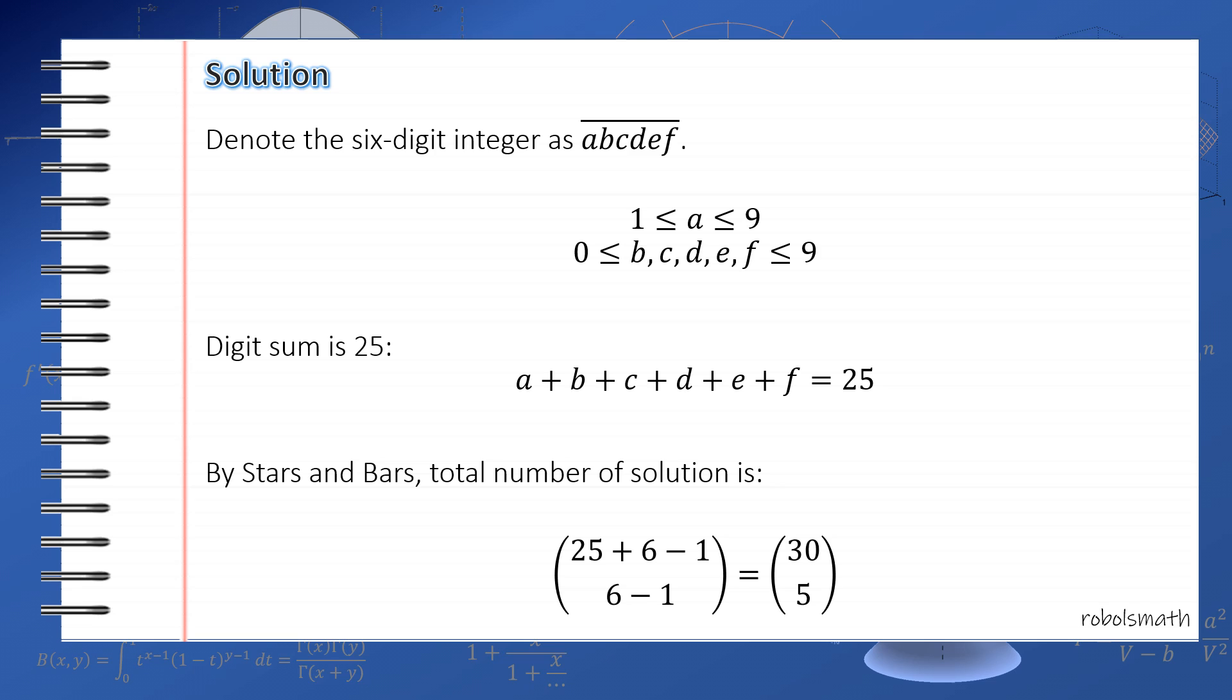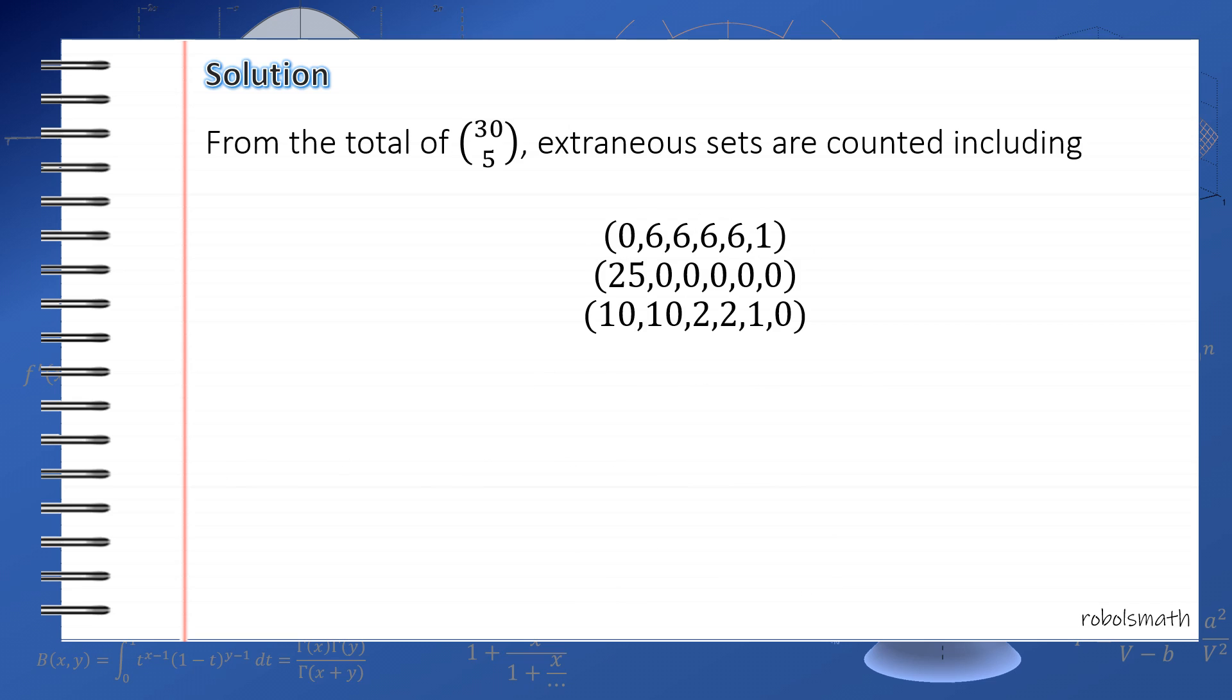Now from this total, however, we have extraneous sets that we don't want, which are essentially outside our representation. We have this set which is 0,10,2,1,2,0, which essentially means you have a leading digit of zero, we don't want that. You also have a set where one variable is greater than 10. You also have a set where two or more variables are greater than 9.